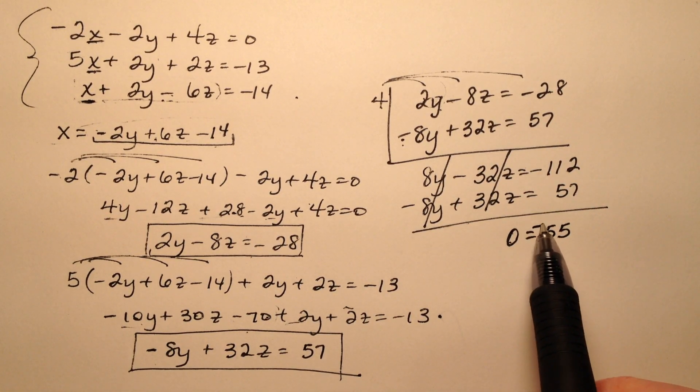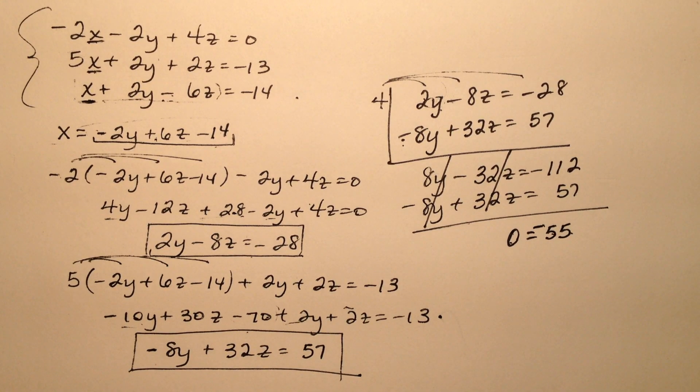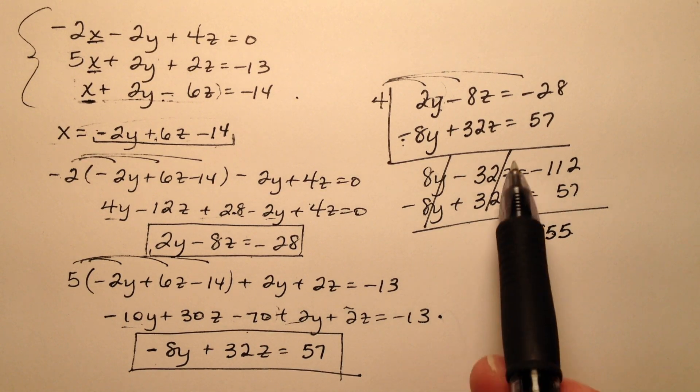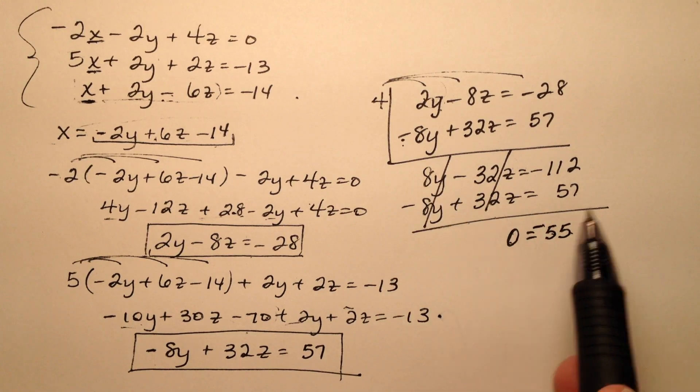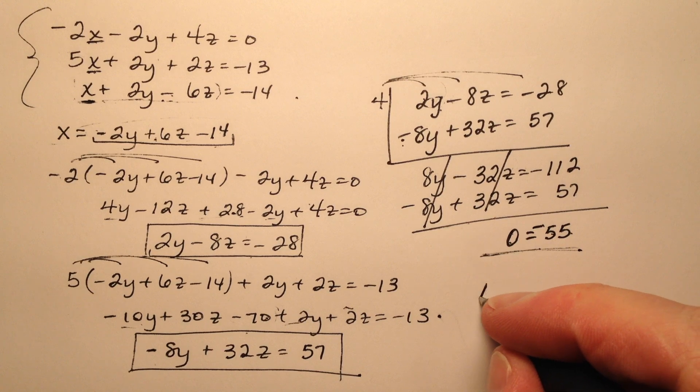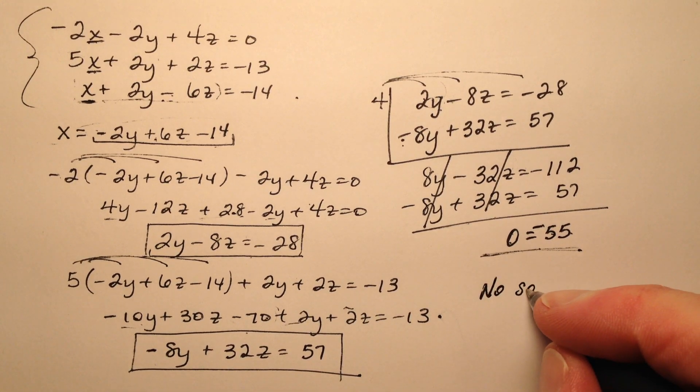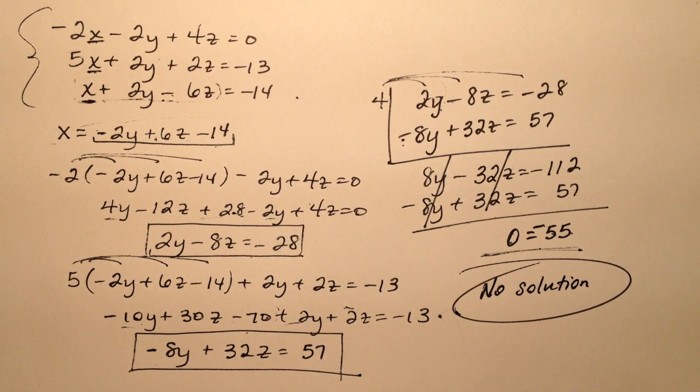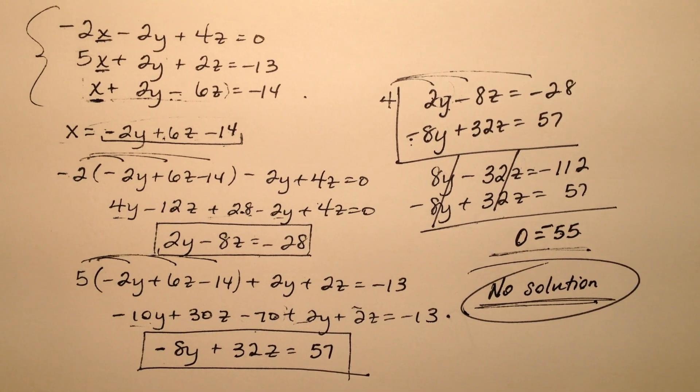So 0 equals negative 55 - well, that doesn't seem to be a true statement at all. So what happened here is that all my variables canceled and I was left with a false statement, so I know this system is going to have no solution. There will be no points of intersection for all three of these lines simultaneously.